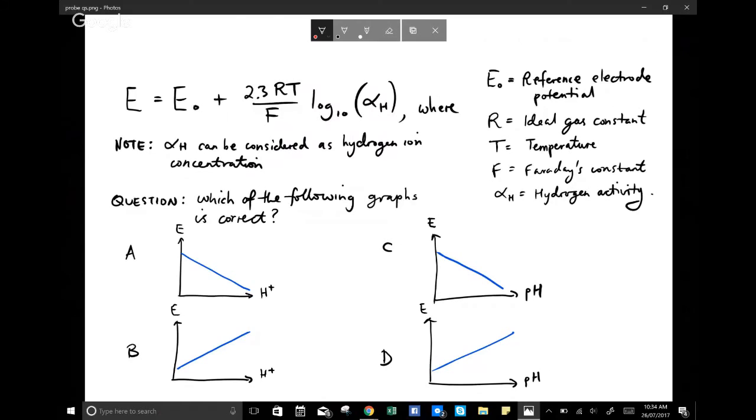Next equation, and on the right here, we've got some definitions as to what those parameters are. You might be asked a question such as this. Which of the following graphs is correct? Meaning to say which one of these graphs correctly shows the behavior of this equation?